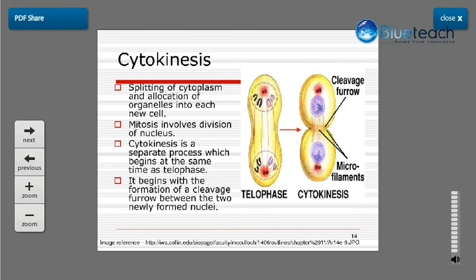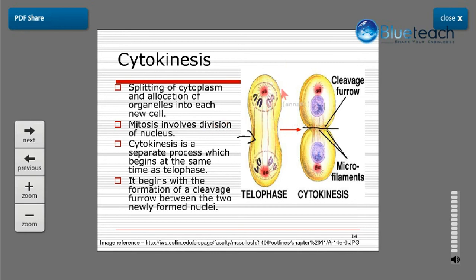Cytokinesis runs concurrently with telophase. Telophase marks the end of nuclear division, while cytokinesis marks the beginning of cytoplasmic division. After telophase, the cytoplasm divides and organelles such as the Golgi body and endoplasmic reticulum are allocated to each daughter cell. Mitosis involves division of the nucleus whereas cytokinesis is a separate process that begins at the same time as telophase. It begins with the formation of a cleavage furrow between the two newly formed nuclei, which constricts further until the cytoplasm divides.